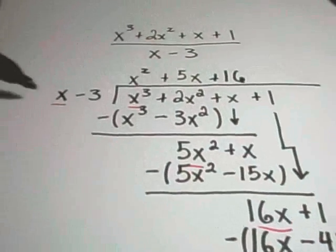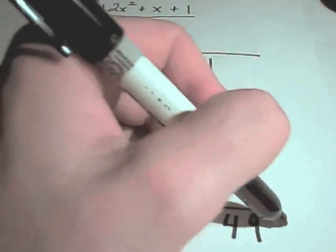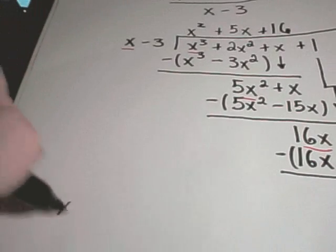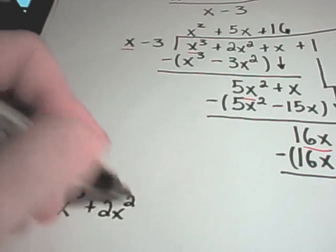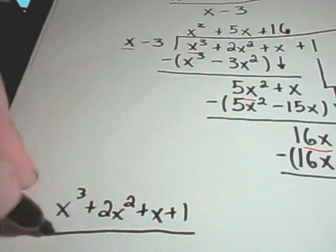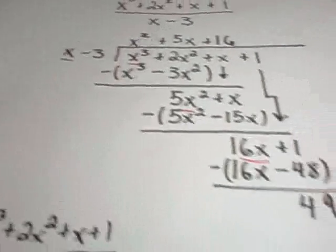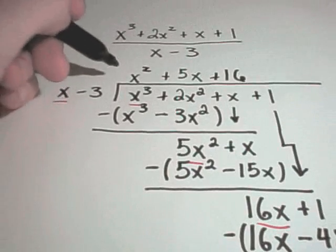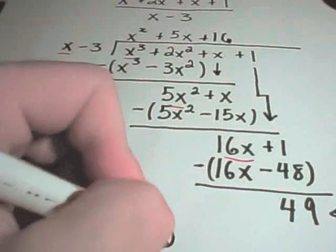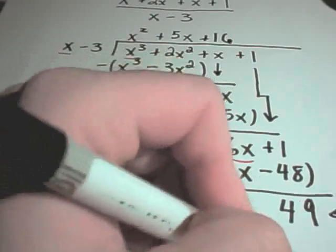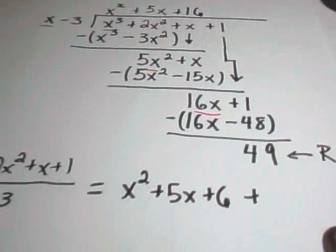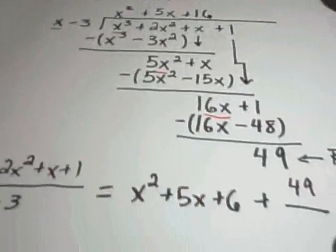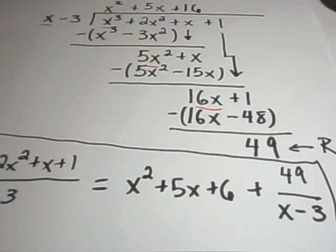My 49 is just a number that has smaller degree than x, so I'm done. This is going to be my remainder. And again, what it says is, the original thing we were dividing, x cubed plus 2x squared plus x plus 1 over x minus 3, you can rewrite this as the stuff on top, x squared plus 5x plus 16, and then we just put our remainder 49 over what we were originally dividing by, which was the x minus 3. And that will be your answer after you've done long division.